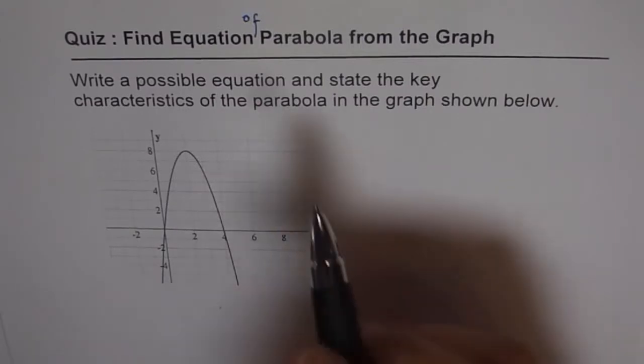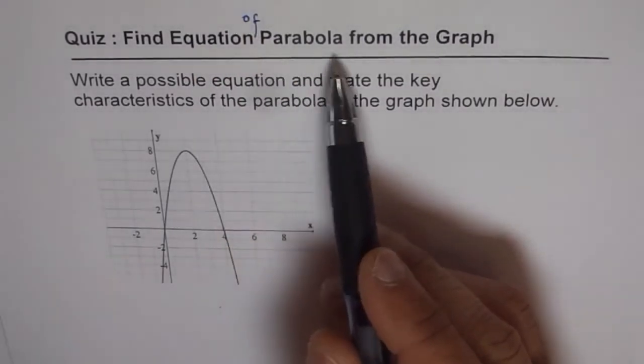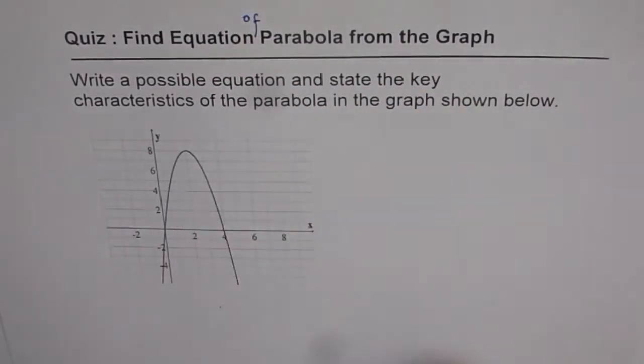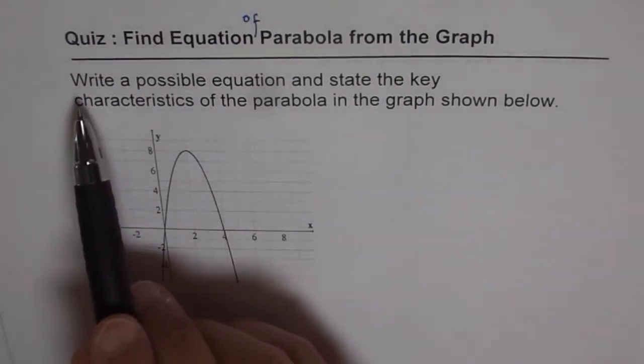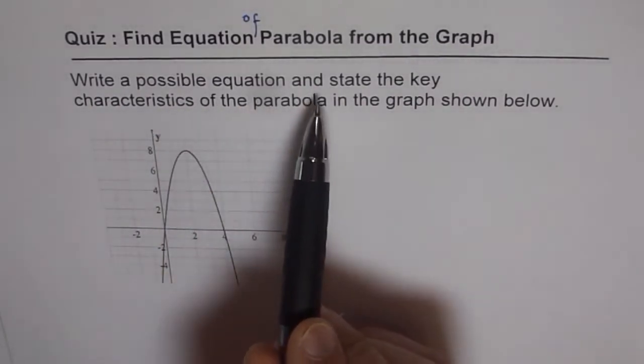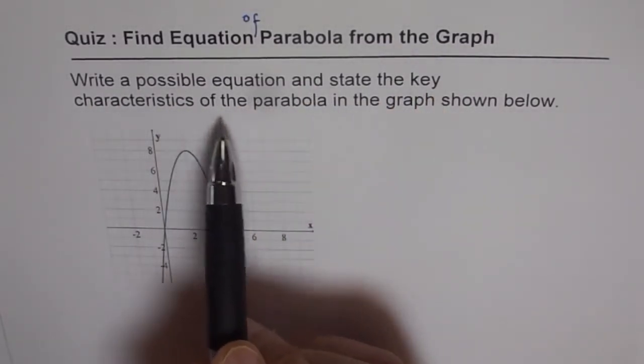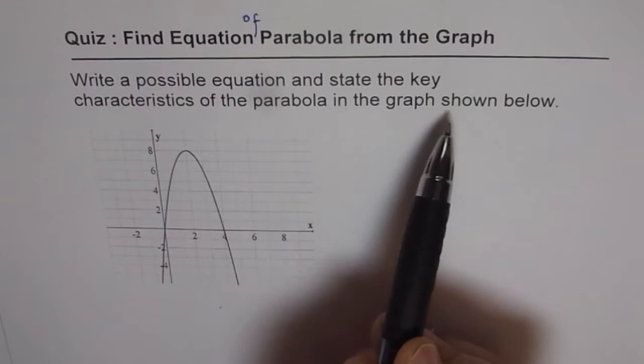The question here is: find the equation of a parabola from the graph. We are given a graph and need to find the equation of the parabola. The question says: write a possible equation and state the key characteristics of the parabola in the graph shown below.